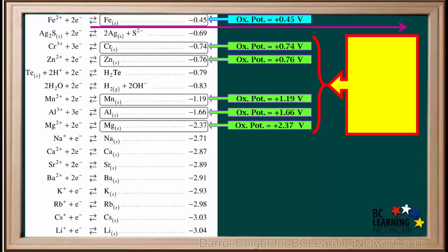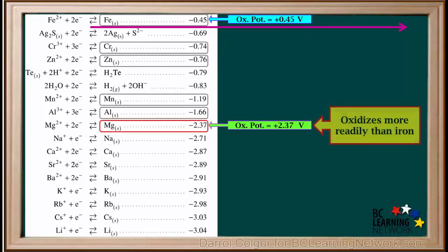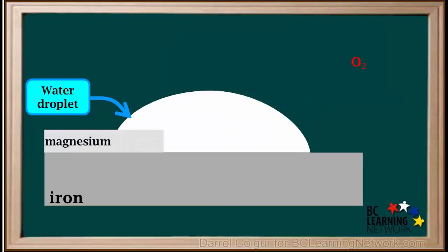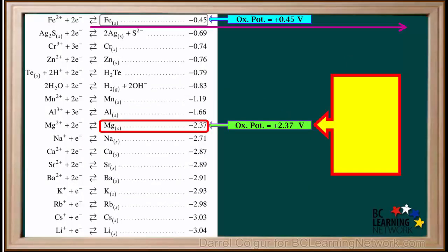Remember, we had shown that metals below iron on the right side of the reduction table will oxidize more readily than iron does. We'll choose magnesium with an oxidation potential of positive 2.37 volts. We'll attach a piece of magnesium to the iron metal. Because it's lower on the right side of the table, and therefore has a higher oxidation potential, magnesium will oxidize more readily than iron.